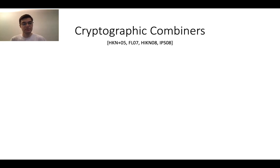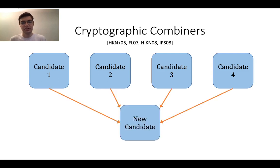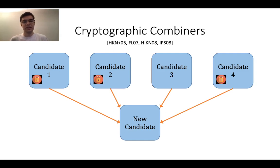So what exactly is a cryptographic combiner? What a cryptographic combiner does is it allows you to take many candidates for some cryptographic primitive — in this case four candidates — and combine them to create a new candidate construction. The guarantee of a cryptographic combiner is: even if all but one of the candidates are broken, as long as there's a single secure candidate, the new candidate will be secure.